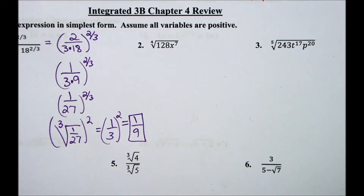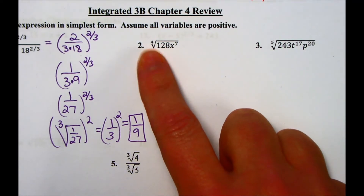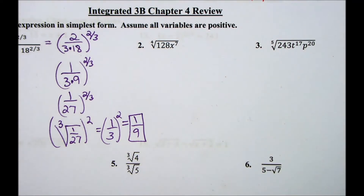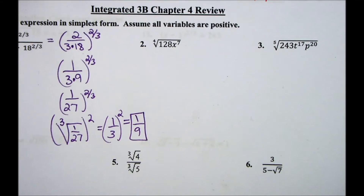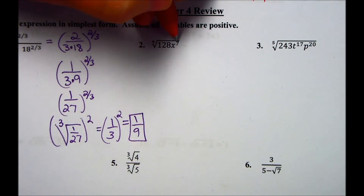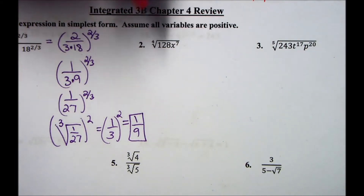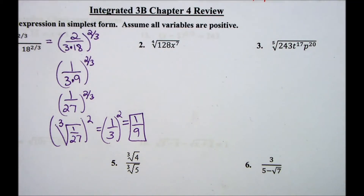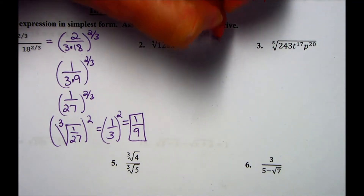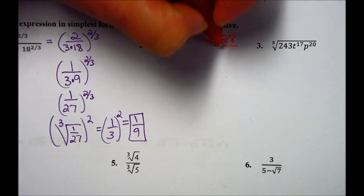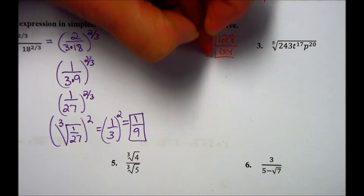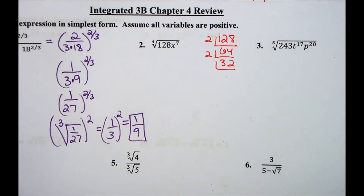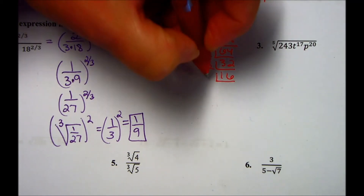Number 2: we're going to simplify the 4th root of 125x to the 7th. What we want to do is factor 125 and x to the 7th into things that are perfect 4th powers. One way of doing this — I like to do my upside-down division. Divide by 2 to get 64, divide by 2 again to get 32, keep dividing by 2 to get 16, and divide again.